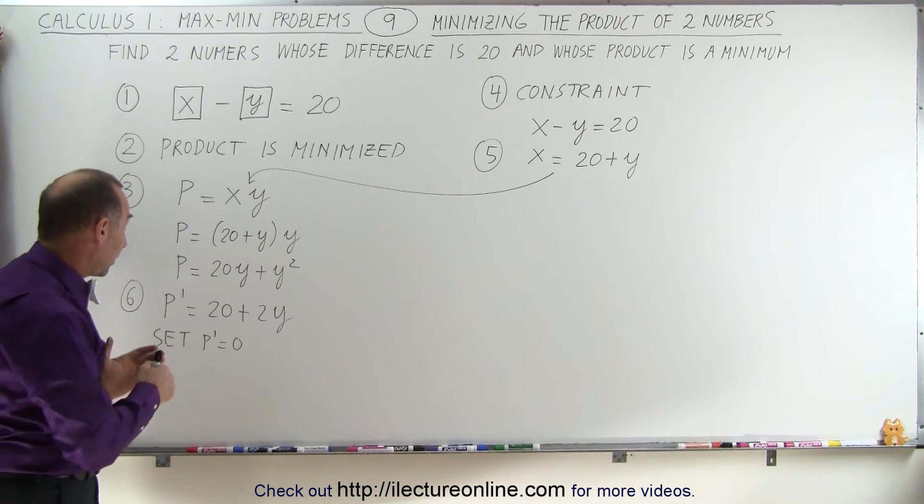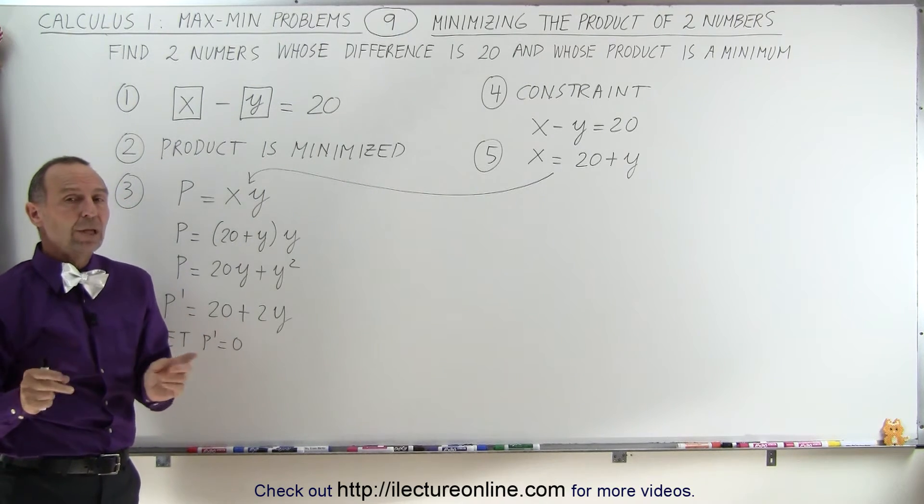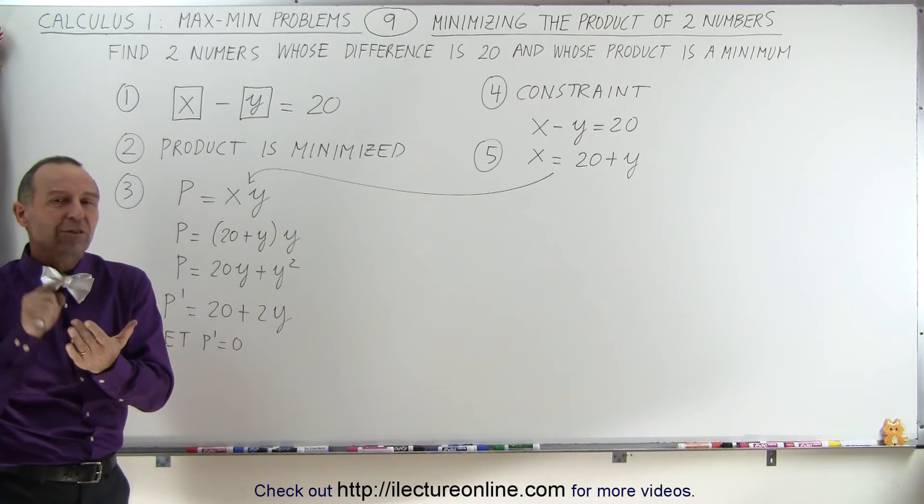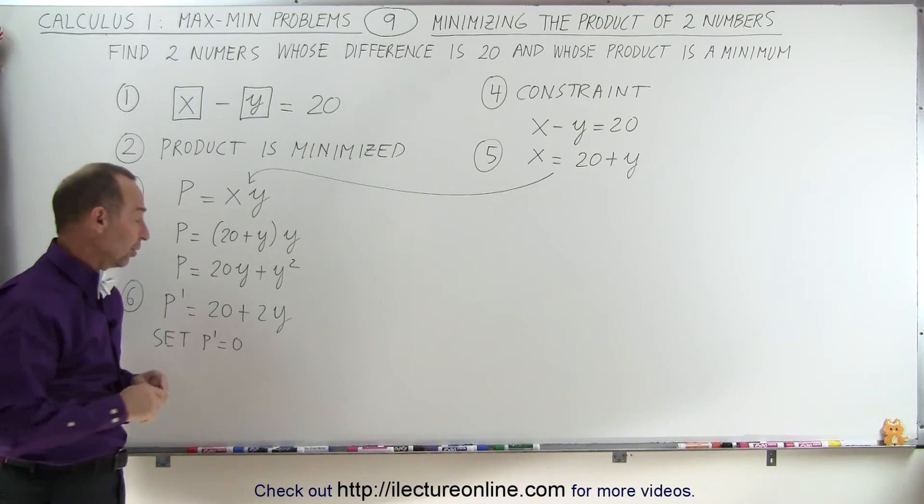Why don't we automatically write it as equal to zero? Well, that's actually a bit confusing because P prime is the derivative of the function and it's not equal to zero. We set it equal to zero because that's where the slope is zero and that's where we find our max or min values.